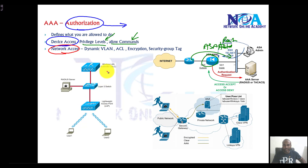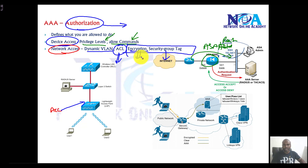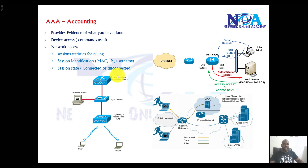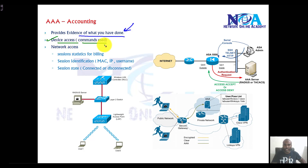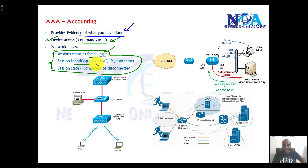For network access authorization, when an accounts user connects to the network, which VLAN should be assigned and what ACL should be applied to that user. You can also apply some advanced authorization like security group tags and encryption. Finally, accounting means keeping a track — like evidence of what they did. For device access, you can do command accounting. For network access, you can track statistics like when they logged in — maybe for billing purposes — or identify devices based on username, IP, and other things, including connection and session state: when they connected and when they disconnected.